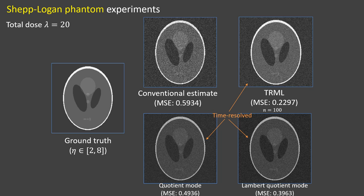Shown here is a synthetic visual example. We use the synthetic image on the left, scaled to represent eta ranging from two to eight, to generate data pseudorandomly. Then we compare conventional and three time-resolved reconstructions. The improvement is visually and quantitatively apparent.